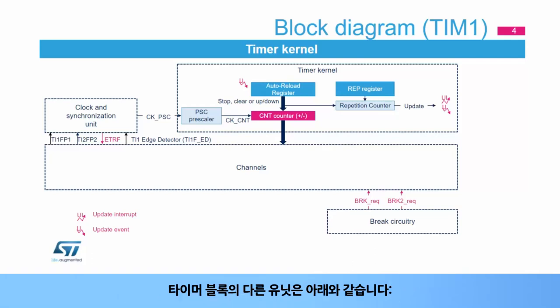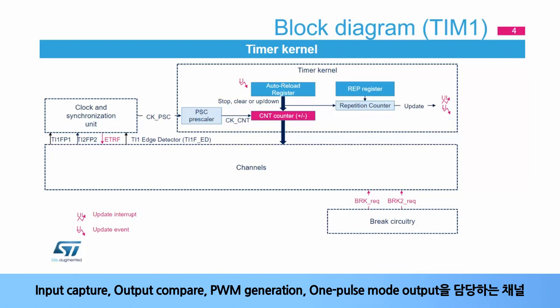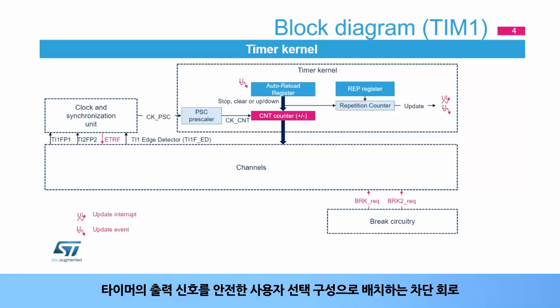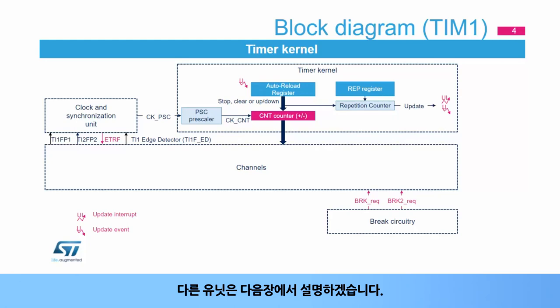The other units of the timer block are: the clock and synchronization unit, in charge of providing the timer clock and triggers; the channels, in charge of input capture, output compare, PWM generation, and 1-pulse mode output; and the brake circuitry, in charge of putting the timer's output signals in a safe, user-selectable configuration. These other units will be described in the next slides.